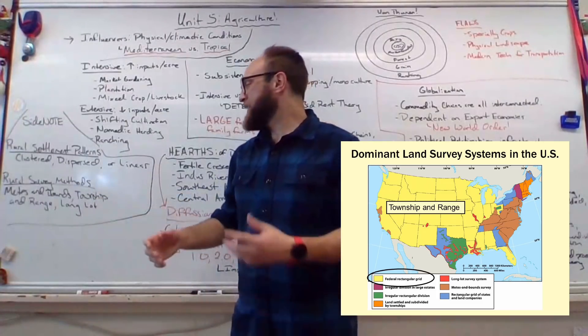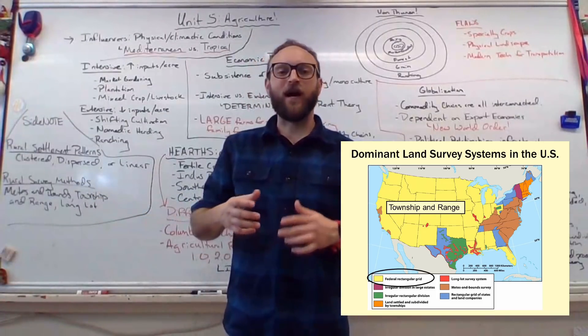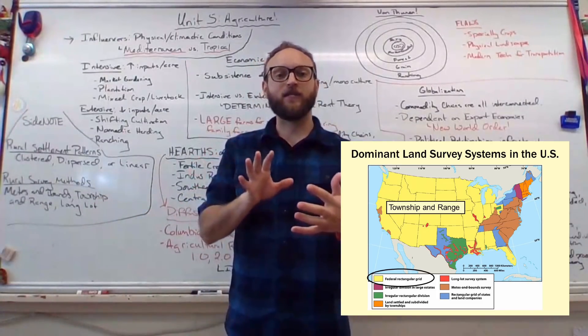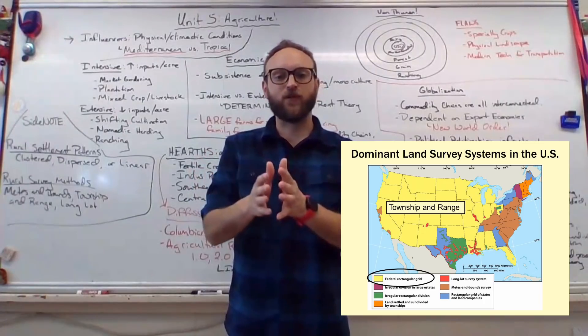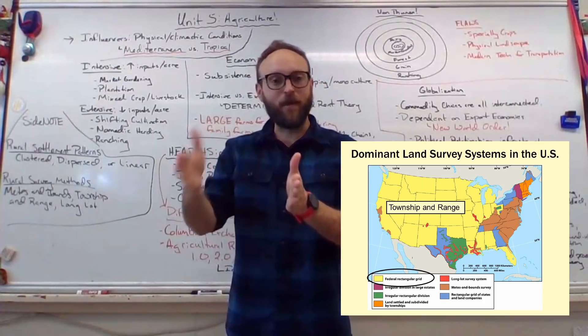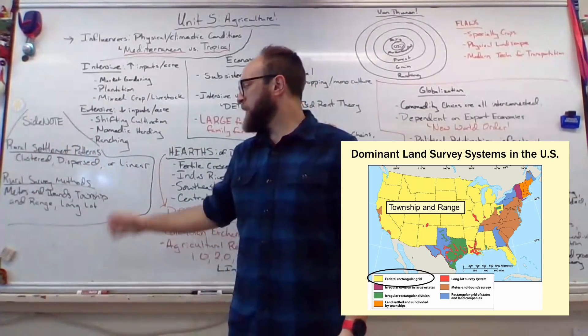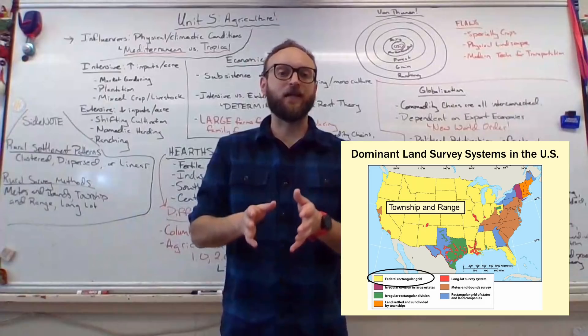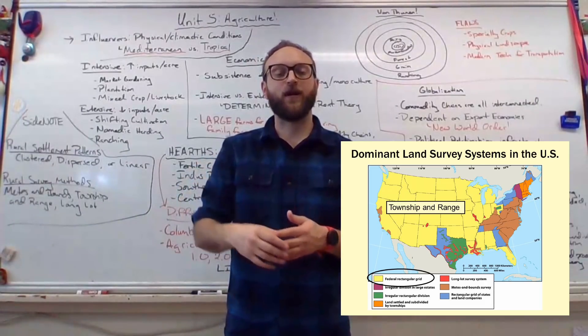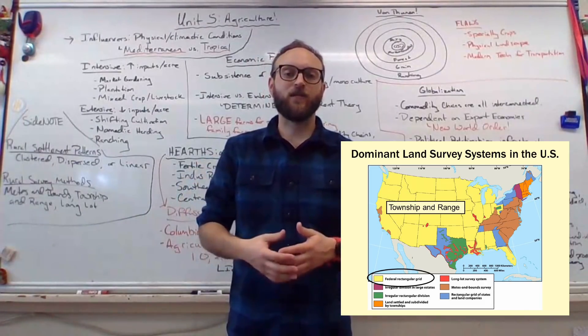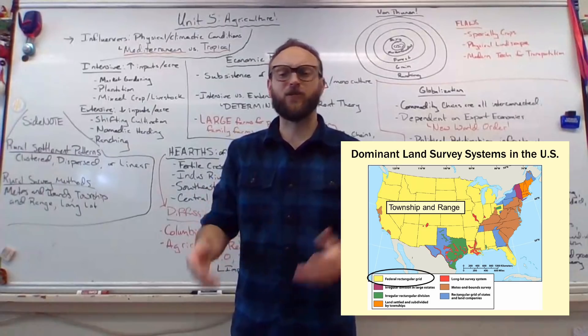Township and range is essentially a way to divide a town in a grid pattern. So it's easy to figure out where you live. First street is exactly one block over from Main Street. Second is two blocks over, so on and so forth. A lot of us have this grid pattern. And then long lot is just long skinny lots. Typically, there's a river access for trade. And you don't see this so much in the U.S. anymore, except maybe with some new construction neighborhoods.